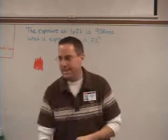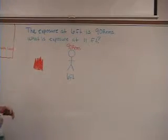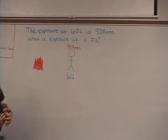Okay, I'm going to go over one more example of the inverse square law. So what you have here is, it says the exposure at 6 feet is 90 rims. What is the exposure at 11 feet?